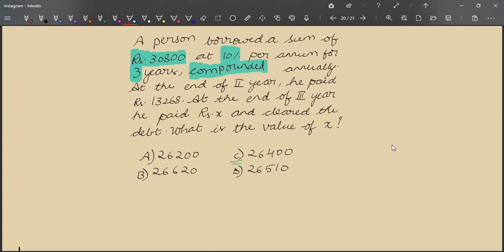But what he did was he paid some of the amount at the end of second year. How much did he pay? He paid Rs 13,600. So let us find how much should be the amount at the end of second year and how much should be remaining after he paid 13,600.